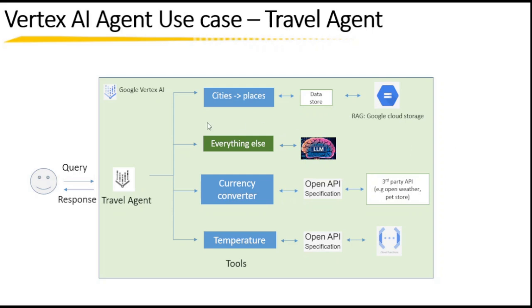This is the architecture or the data flow of the travel agent application that we are going to build. The user will ask a query, it will go to the Google Vertex AI platform and come to the travel agent app built on Vertex AI. The LLM will then decide based on the query — if the query is related to cities, it will go to the data store, and through RAG the information will be retrieved from Google Cloud Storage and then responded to the user.